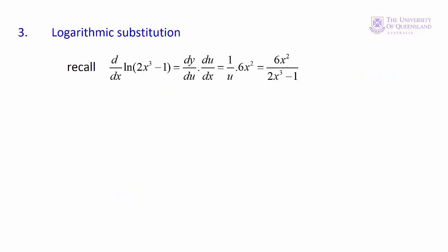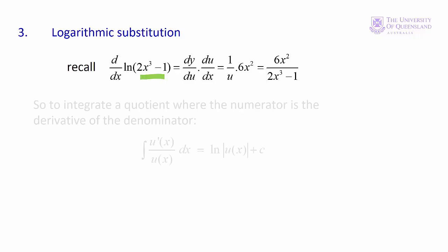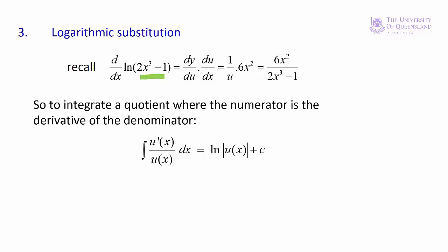The last type of function we look at in integration by substitution is the case where we have a quotient. Recall from lecture 4 when we applied the chain rule to a log function — we ended up with a quotient. For example, the derivative of log of 2x cubed minus 1: we let u equal 2x cubed minus 1, find dy/du as 1/u, then du/dx as 6x squared, and substituting back we get 6x squared over 2x cubed minus 1. We can reverse that if we have a quotient where the numerator is the first derivative of the denominator, or something close to it. When we have that situation, the integral is the log of the absolute value of u(x) plus c. Remember the argument of the log must be positive, so we take the absolute value.